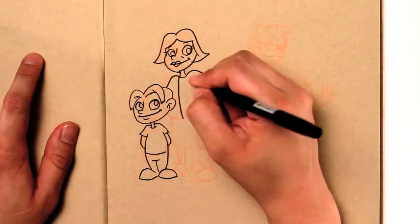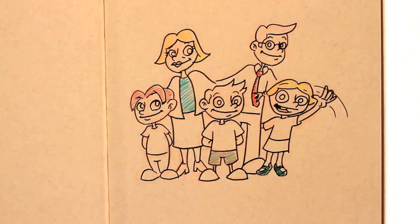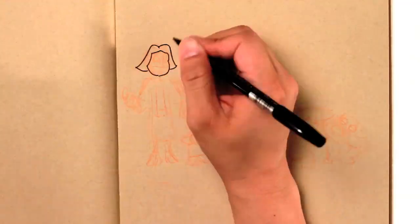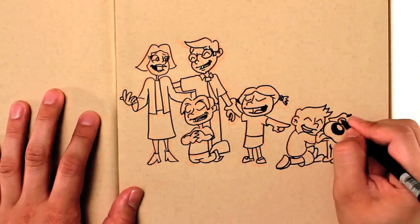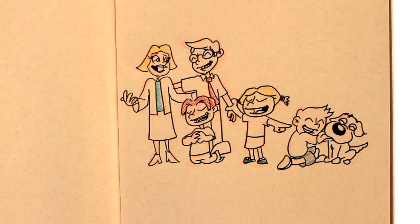Meet the Smiths. They're a typical family: mom, dad, three kids. The kids really want a dog. They beg mom and dad, who eventually give in and adopt a puppy named Muffin.